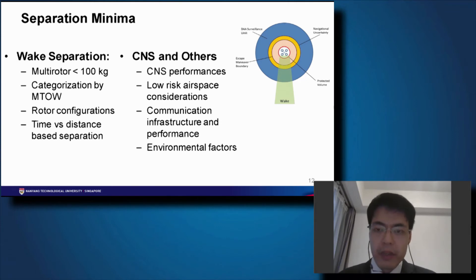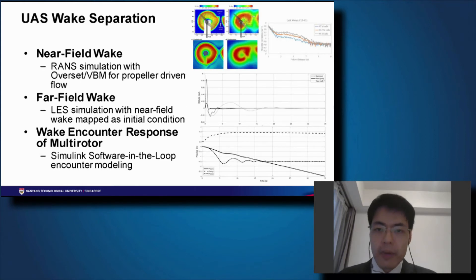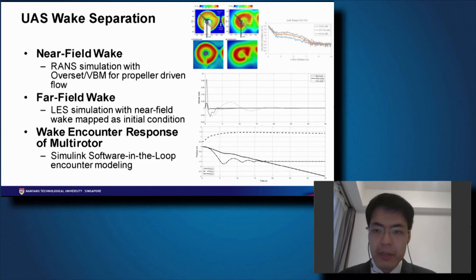We are initially ignoring the impact of buildings on CNS, but eventually we want to look into communication infrastructure impact on CNS performance. For wake separation, we are conducting the study using CFD. We started with near-field simulation using RANS simulation, then mapped the wake field into far-field LES simulation. The final component is the wake encounter response, done using software-in-the-loop simulation in Simulink.